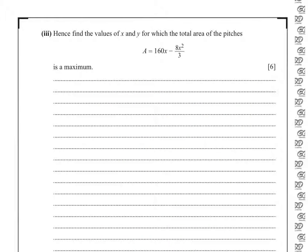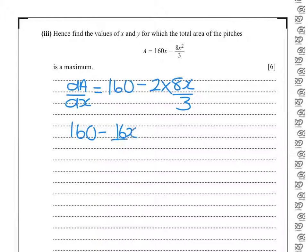We're asked to show that this is a maximum. So the first thing I'm going to do is differentiate A with respect to x, which gives me 160 minus 2 times 8x over 3. And at a maximum, the differential equals 0.